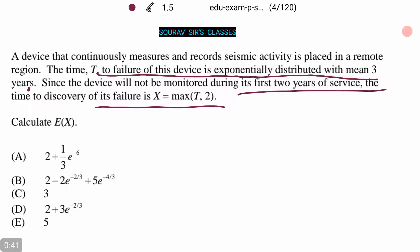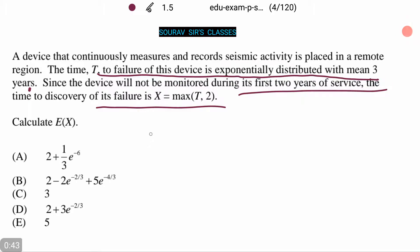The density function is given by f(t) equals 1/3 e to the power minus t/3, with t lying between 0 to infinity. Therefore, expectation of X equals expectation of max(T, 2).